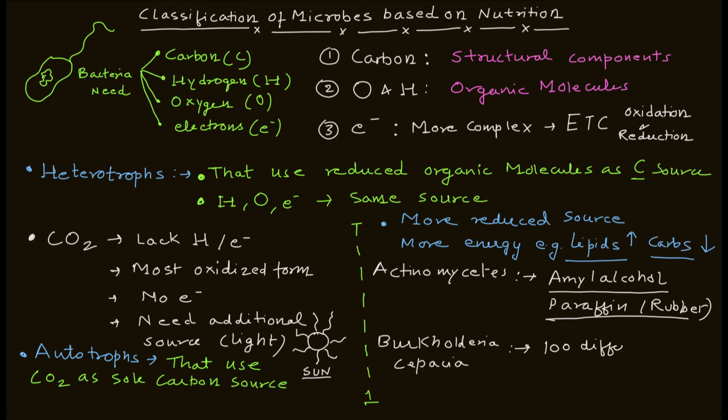Next example is Burkholderia cepacia. This organism can utilize 100 different molecules as a carbon source. You can imagine the capability of this organism. That is why microbes are amazing. They are very important. They can degrade harmful molecules that are toxic to our environment.